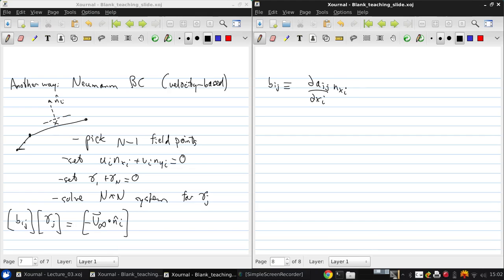plus the other partial derivative times the normal components. So if we call these panel midpoint field points our control points, then the right-hand side from the above equation gives u_infinity n_xi + v_infinity n_yi.